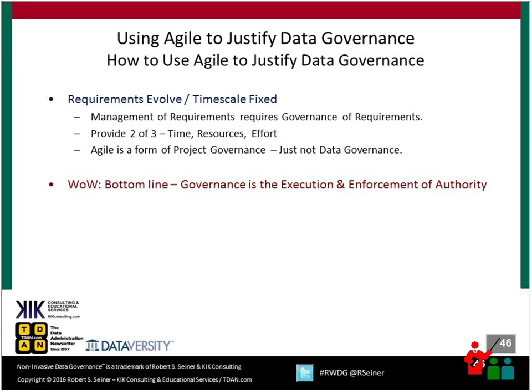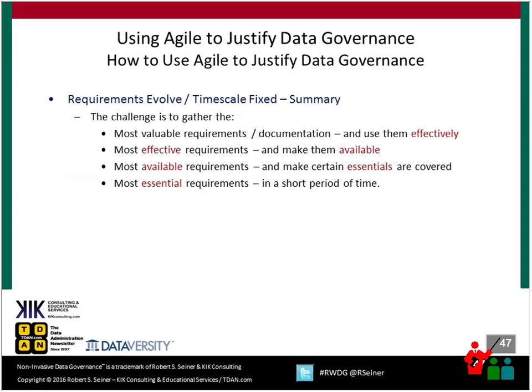Agile itself is a form of project governance — it's just not data governance. As we try to align data governance with agile efforts, we want to make sure that data requirements are addressed in a timely manner so as not to slow down agile delivery. The bottom line is that governance — the execution and enforcement of authority — is the same for both: making sure projects get done in a timely manner and address business requirements. The challenge is to gather the most important requirements, make that information available, and ensure essential requirements are addressed in a timely period so we don't prevent agile projects from moving forward.